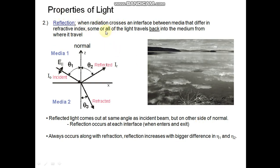Properties of light. Reflection: When radiation crosses an interface between media that differ in refractive index, some or all of that light travels back into the medium from where it traveled. See here, reflected light comes out at the same angle as incident beam but on the other side of normal.